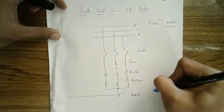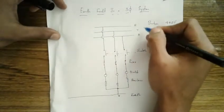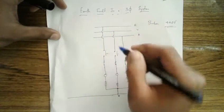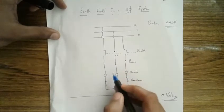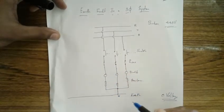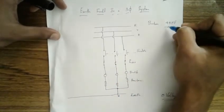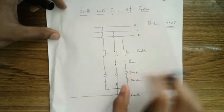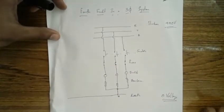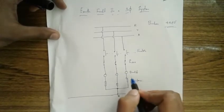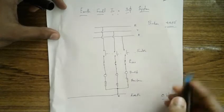Current will flow from high voltage to low voltage when there is a potential difference. So current will start flowing through the fuses, bulb, and resistance and come to earth, because there is zero voltage at earth and 440V on the line. The bulb will glow - this is the normal condition. If there is no earth fault, the bulb will be in a glowing condition.